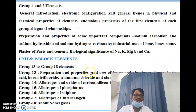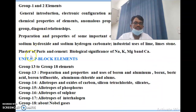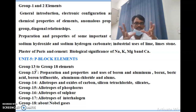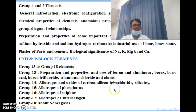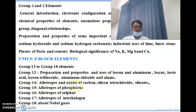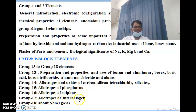Unit 5 is p-block elements, covering Group 13 to Group 18. Group 13 includes preparation and properties of boron, aluminium, borax, boric acid, boron trifluoride, and aluminium chloride. Group 14 covers allotropes and oxides of carbon, silicon tetrachloride, and silicates. Group 15 covers allotropes of phosphorus, Group 16 allotropes of sulfur, Group 17 interhalogens, and Group 18 noble gases.